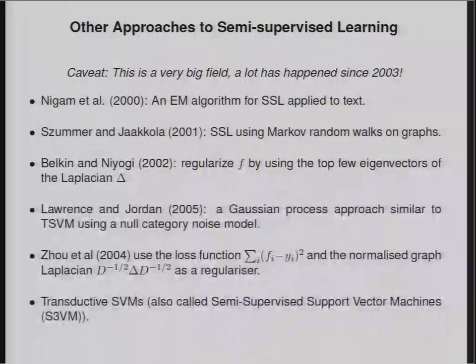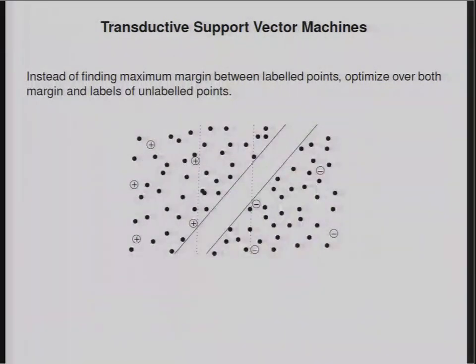The transductive SVM, or sometimes called semi-supervised SVM, is an interesting idea for doing semi-supervised learning where essentially instead of finding a maximum margin, here's this caricature of that, instead of finding a maximum margin separating hyperplane—these are the plus label points and minus label points and unlabeled points in black—the dotted lines are the maximum margin separation. What this does is it tries to optimize both over the margin and the labels of the unlabeled points. So in this case, this would be the transductive SVM solution.